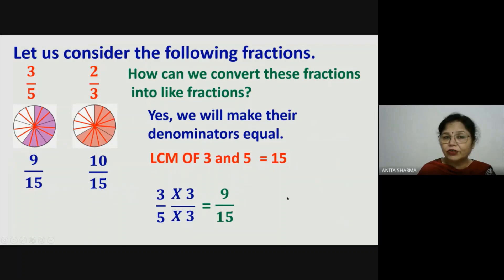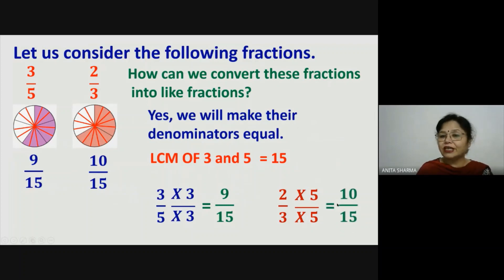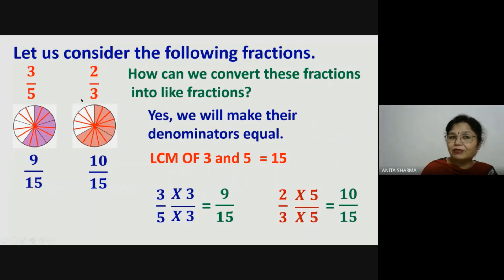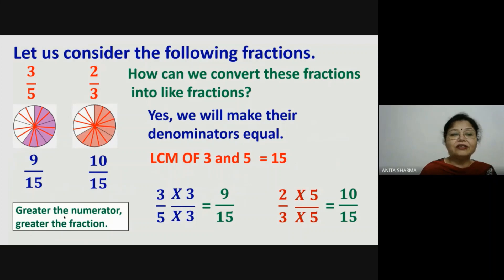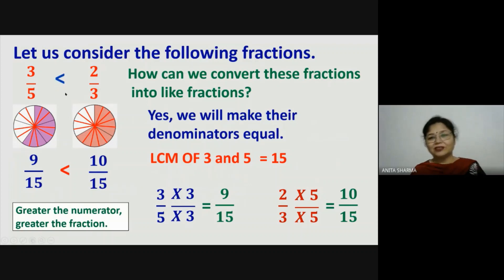So now both fractions — which were previously divided into 5 and 3 parts — are both divided into 15 parts. We have converted them into like fractions. Instead of comparing three-fifths and two-thirds, we compare nine-fifteenths and ten-fifteenths. The rule for like fractions: greater the numerator, greater the fraction. So nine-fifteenths is less than ten-fifteenths, therefore three-fifths is less than two-thirds.